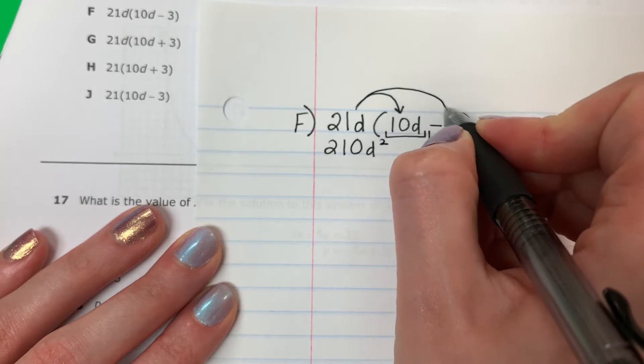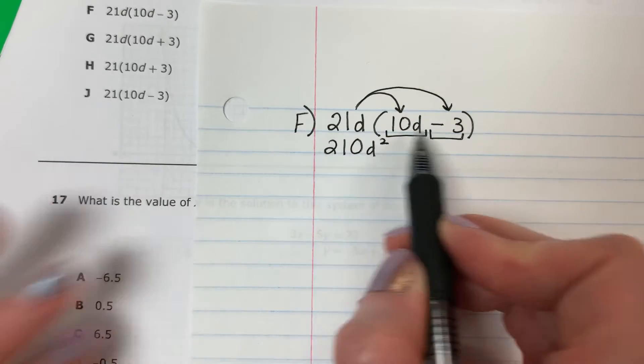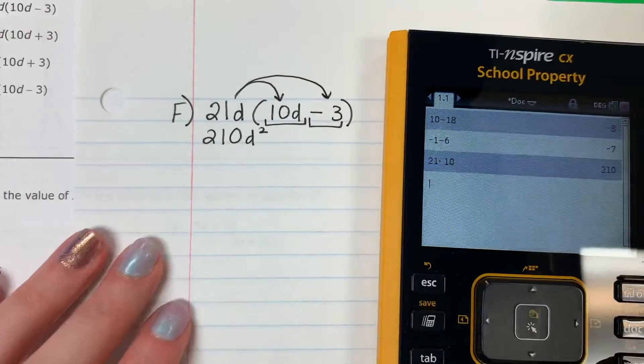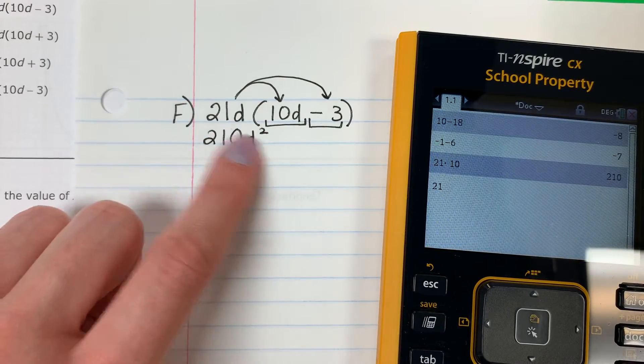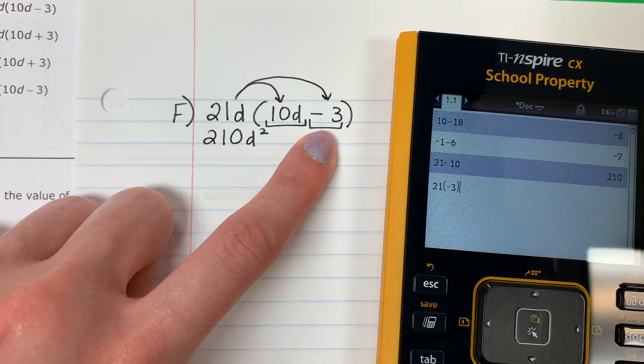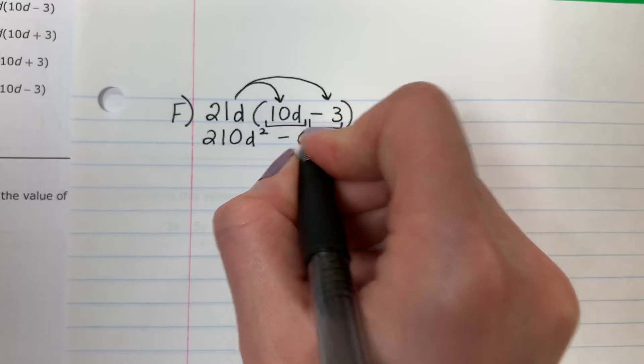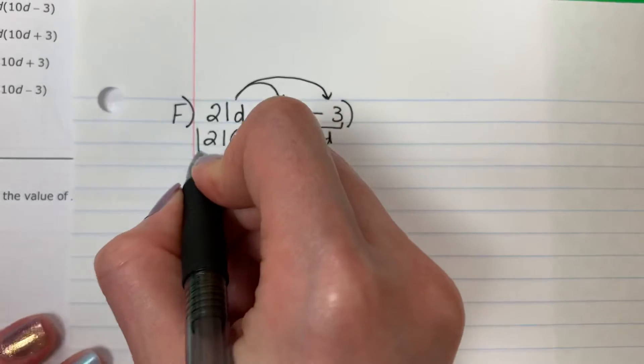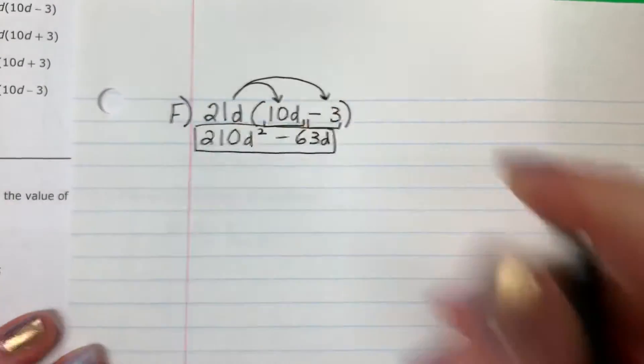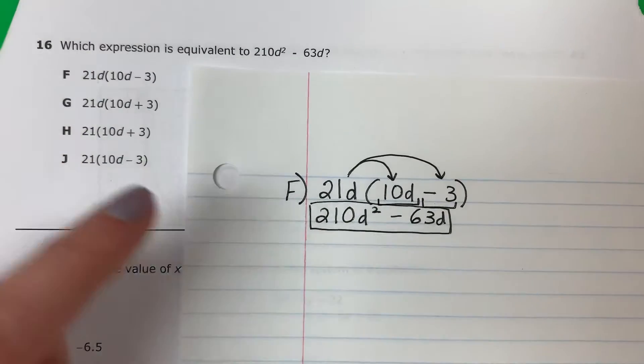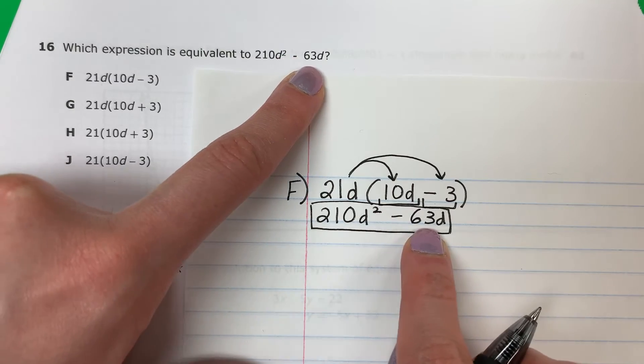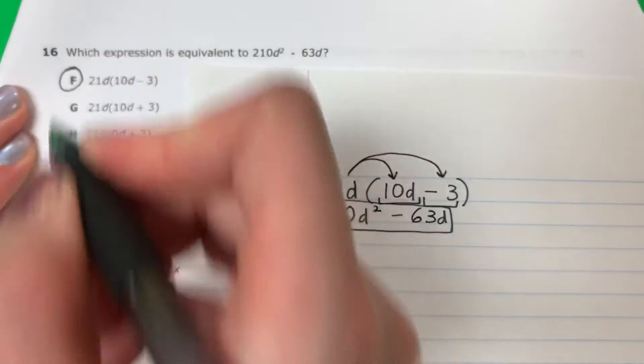Now I will do, ahora voy a hacer 21 times negative 3, 21 por negativo 3. 21 parenthesis negative 3 parenthesis. And I get negative 63, negativo 63. And this one has a D. Esta tiene D. So I will put a D here. Okay. Now we're going to compare. Vamos a comparar. Is this the same? Es lo mismo? 210 D squared minus 63 D. Yes, yes. Sí. This is my answer. Sí. Esta es mi respuesta.